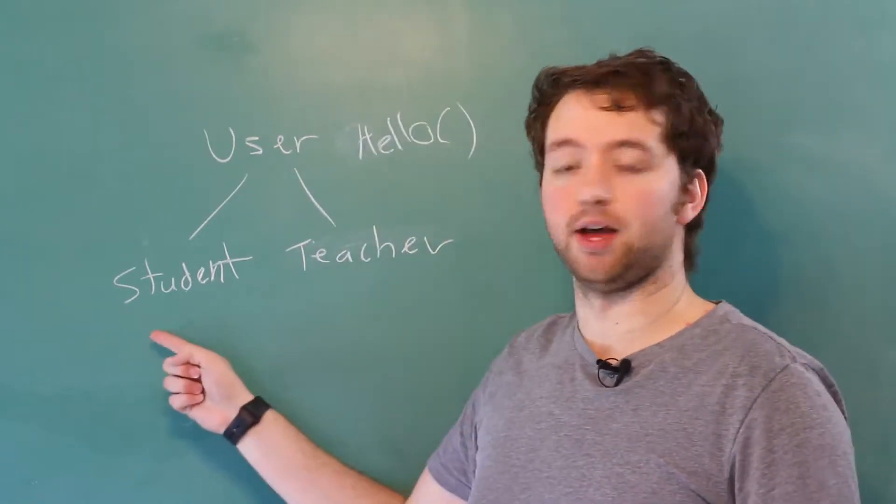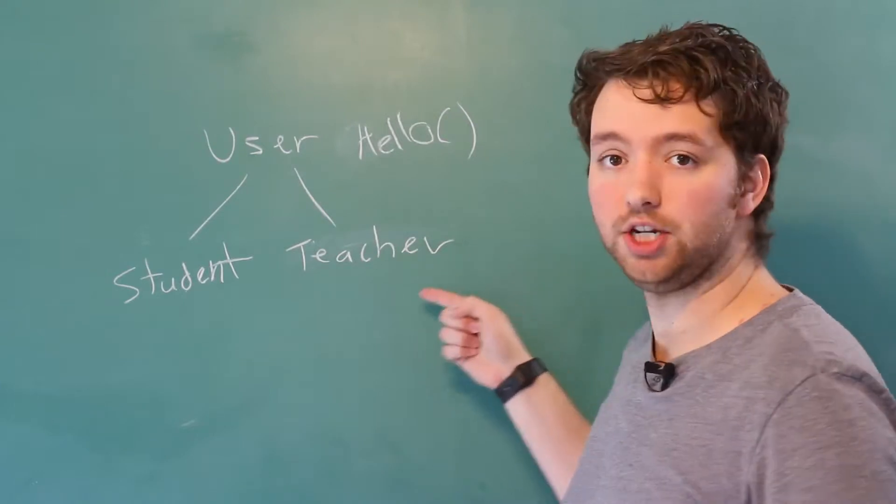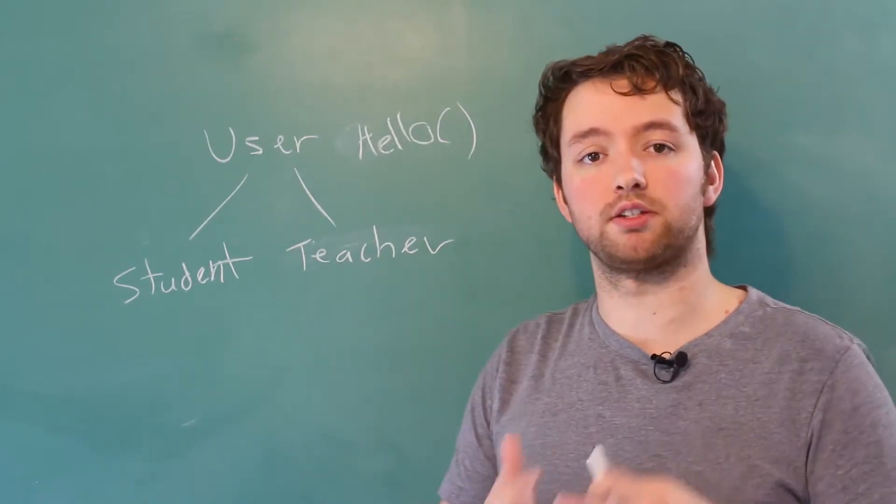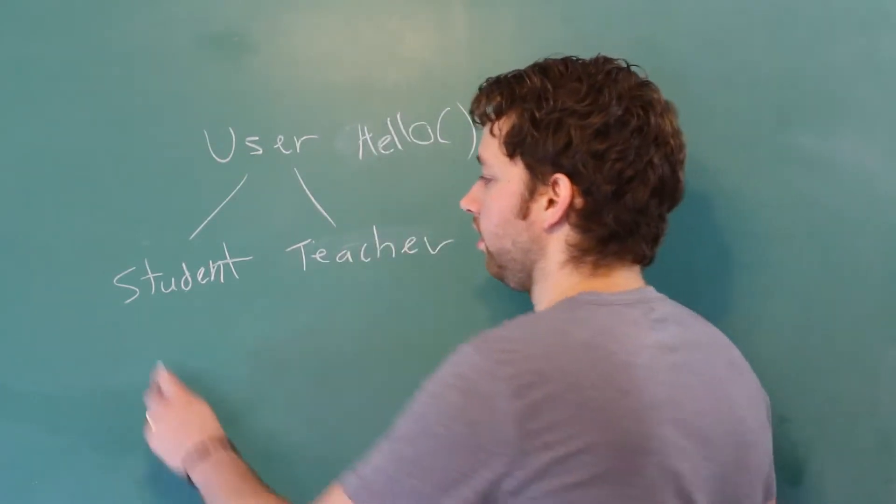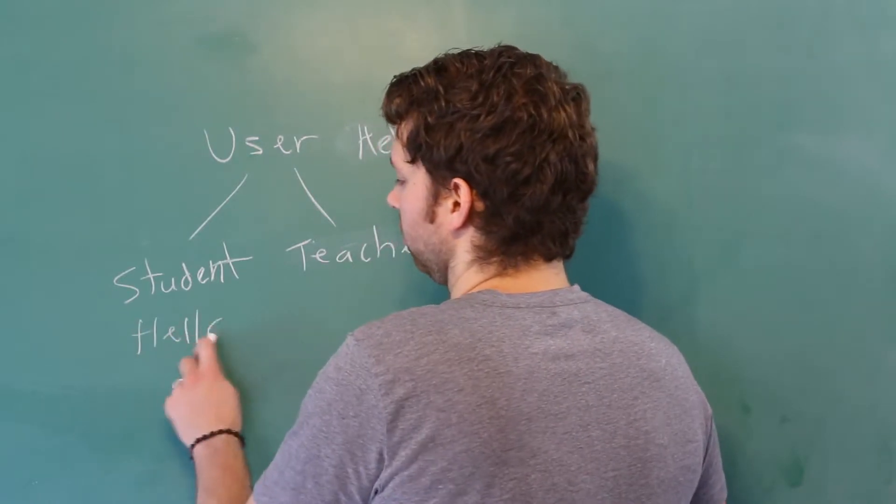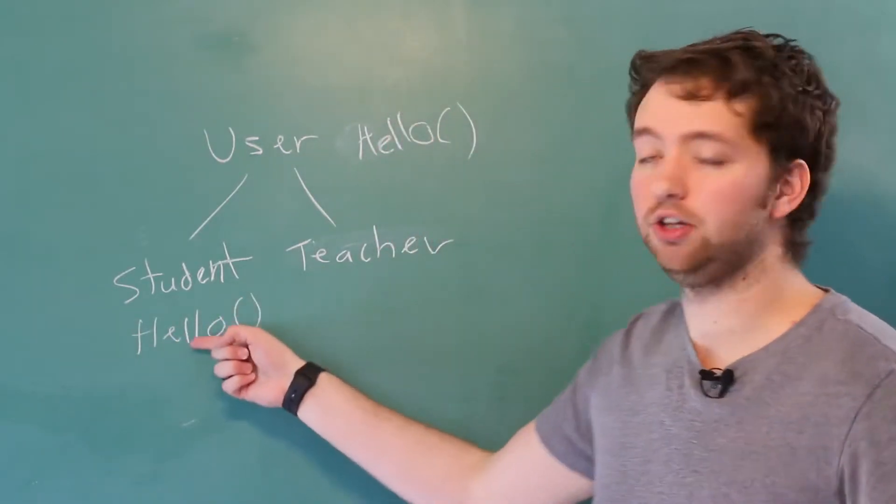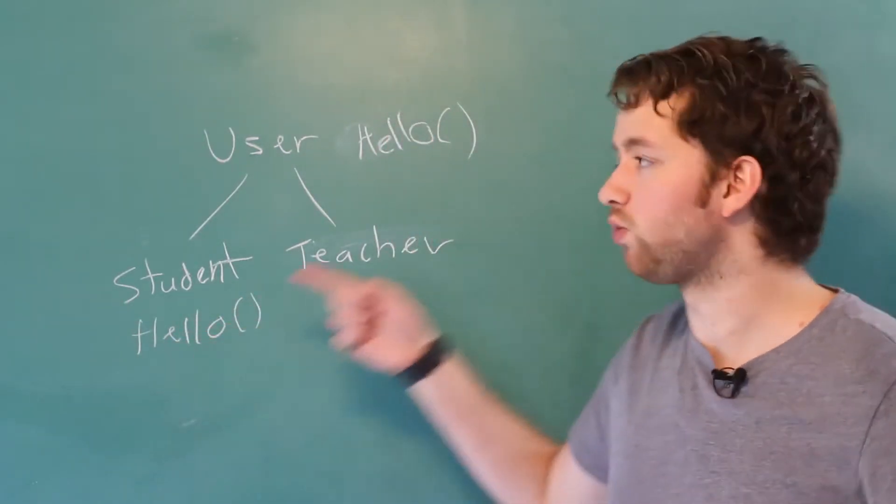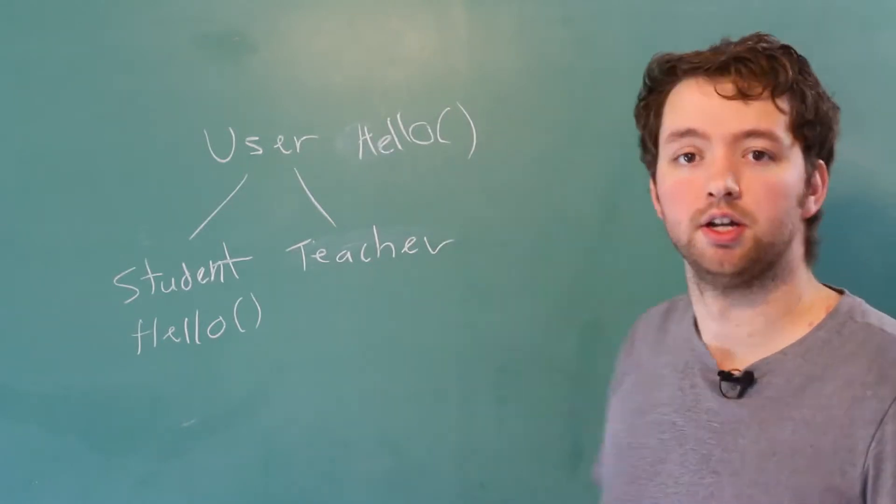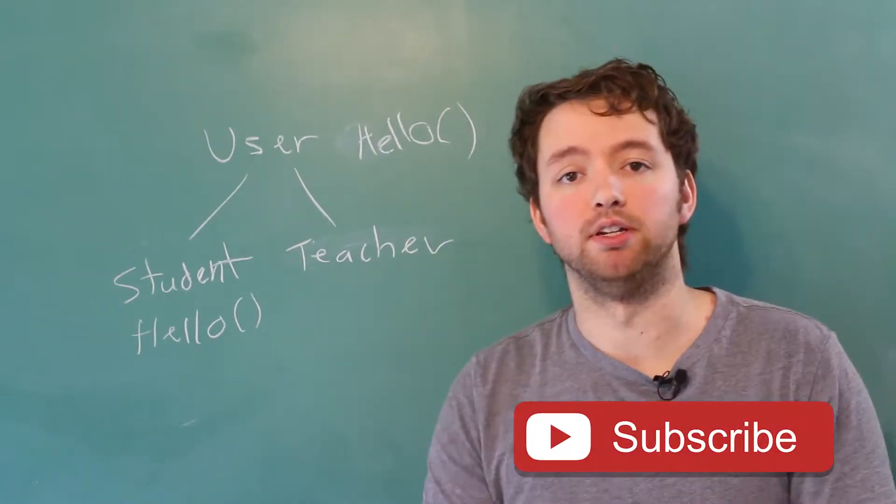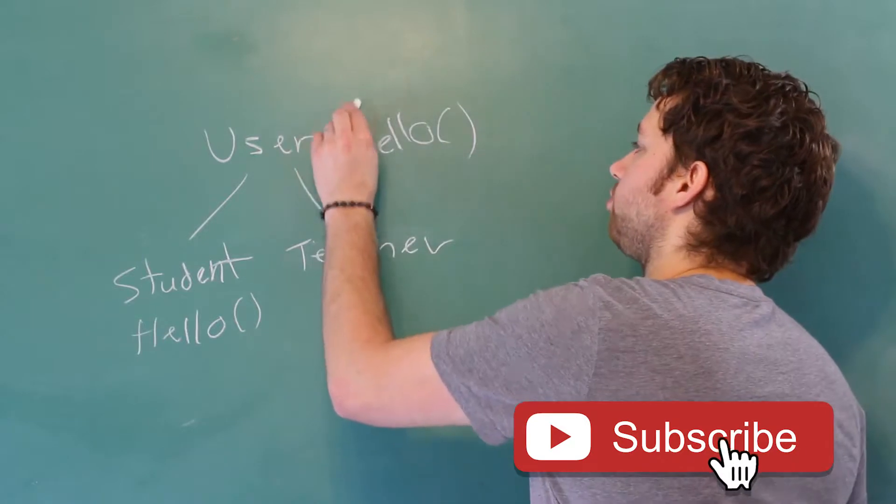We're automatically going to have that method available to us on the student and the teacher. But what if we wanted to customize it for the student? We could create our own Hello method and we're basically overriding this method here. In order for that to happen, this needs to be a virtual method.